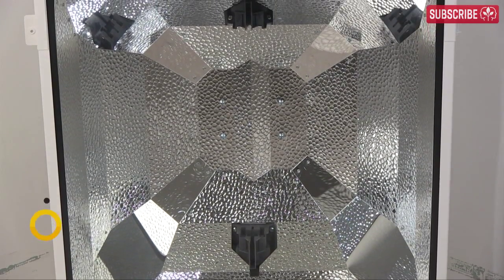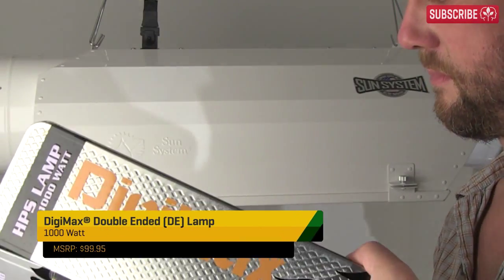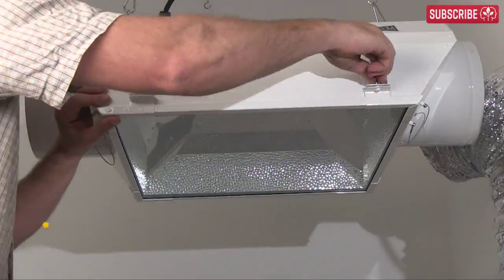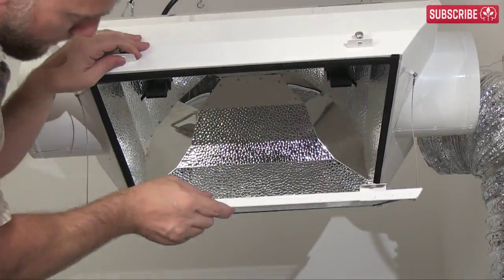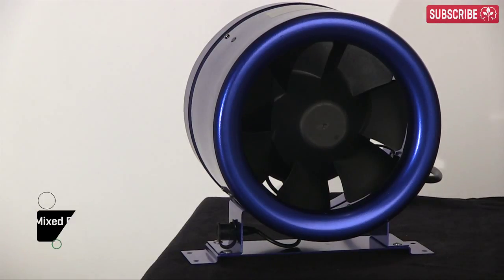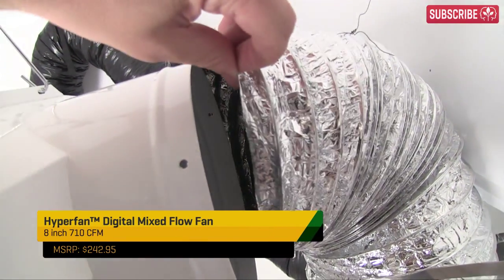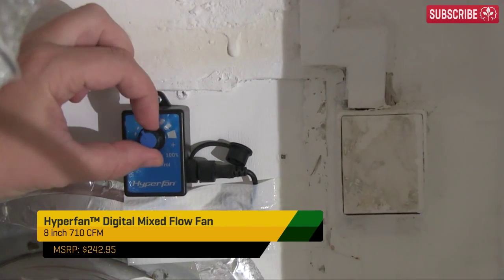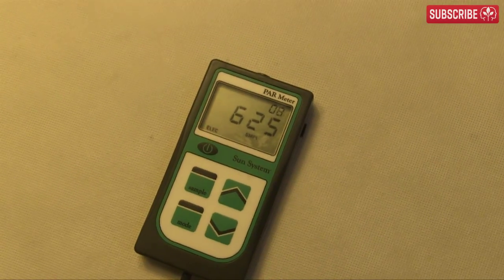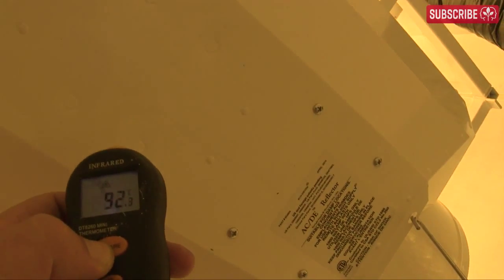So what am I actually testing today? I wanted to compare the PAR output of this Digimax 1000 watt DE lamp in this AC DE Reflector with no fan blowing air through it. This lamp is already run in for well over 100 hours. Then I'm gonna connect the reflector to an 8-inch hyperfan running at 35% power to see if the PAR drops. Finally, I turn up the hyperfan to 100% power or 710 CFMs and measure the PAR again. I'll also take some temperature readings of the reflector itself.